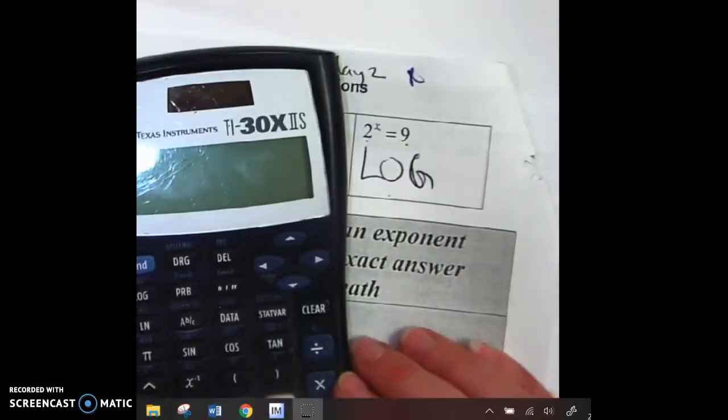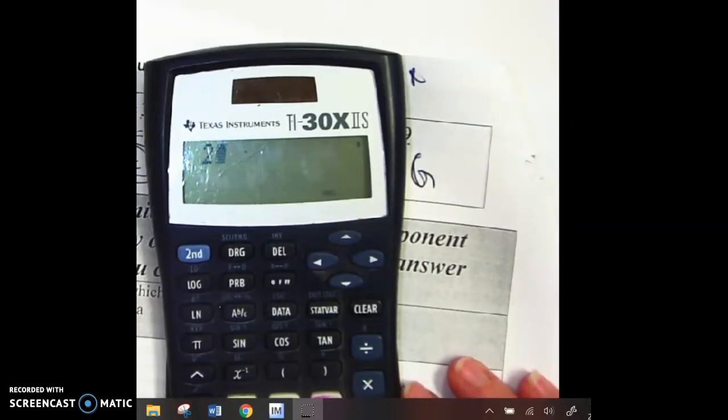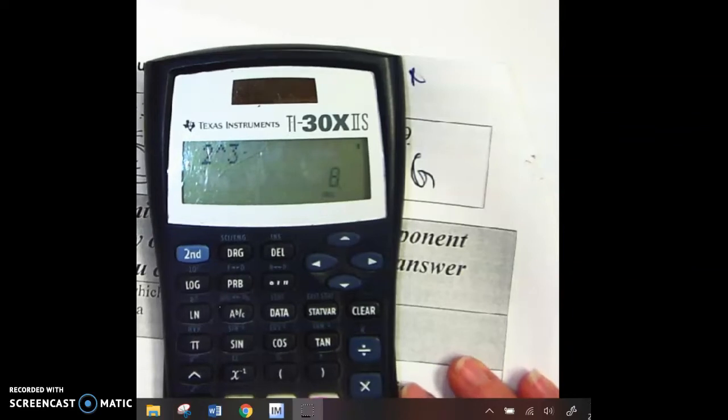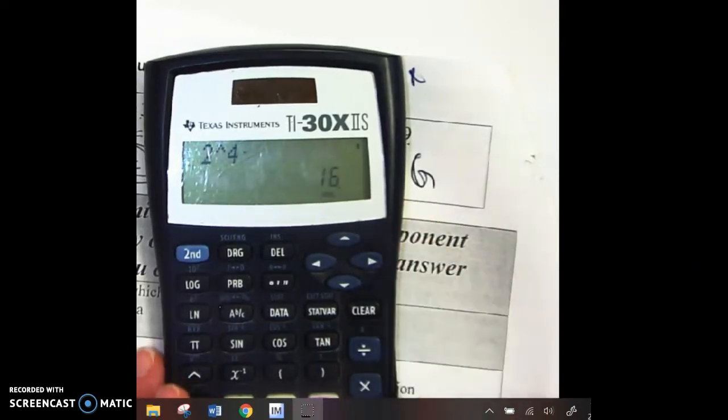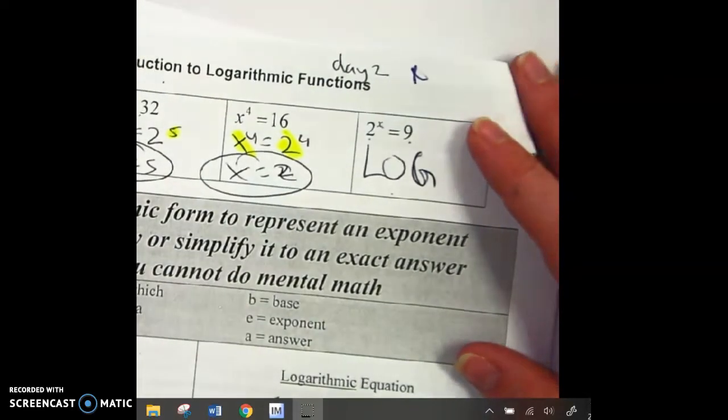So, technically, I could go, okay, let's try. If I turn it on, 2 to the 1st, 2. 2 to the 2nd, 4. 2 to the 3rd, 8. 2 to the 4th is 16. So it's somewhere between 3 and 4, but we don't know exactly what it is. We could do a lot of guess and check, but guess and check is not efficient. There's got to be a formula.